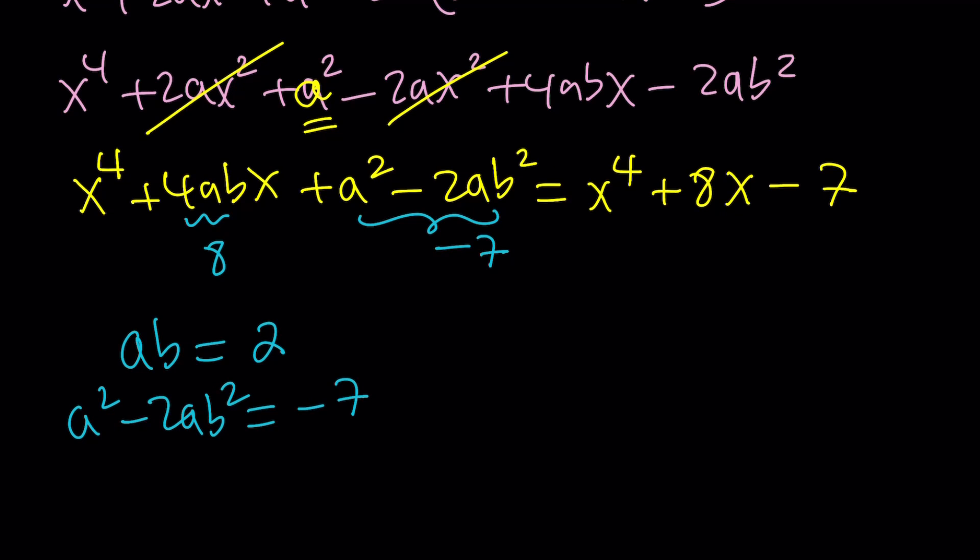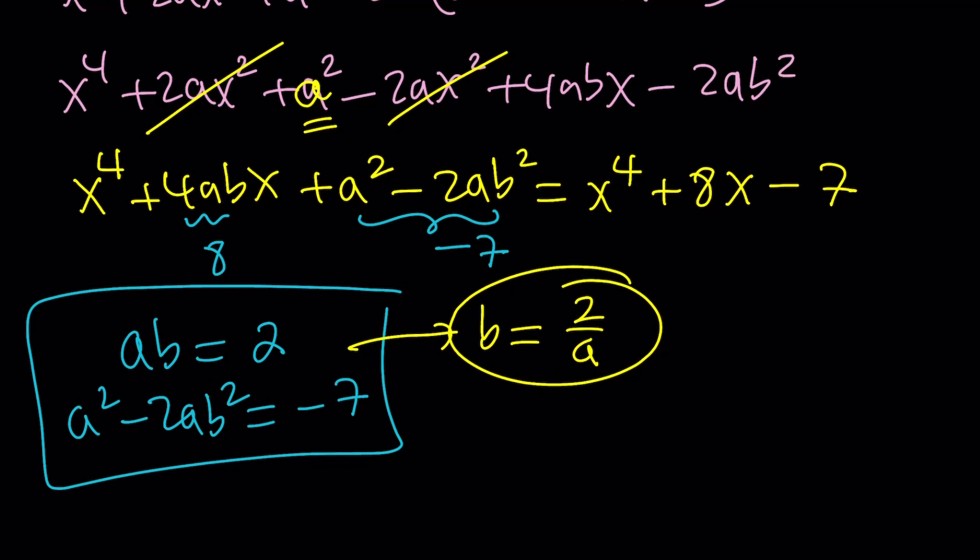So we have a system. How do we solve this system? Easy, by substitution. Notice that from the first equation, you can isolate a or b. Which one is better? I'm going to isolate b. If you want, you can isolate a as well, same thing. Let's isolate b and write it as 2 over a. And then, we're going to plug it in here.